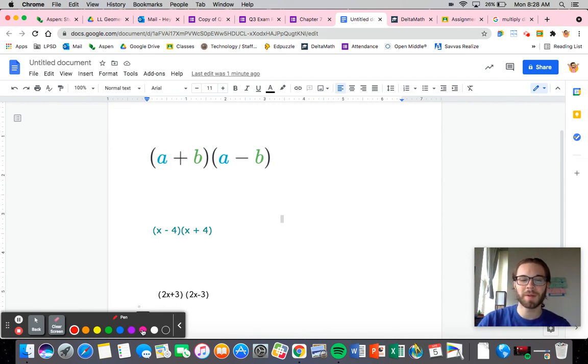The first case that we are going to look at is going to be multiplying differences of squares. So we're going to call this difference of squares, and you're going to see why at the end. The name might not make sense right now, but it will make sense in a minute.